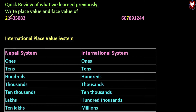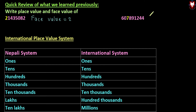We are going to write the place value and face value of the digits. Face value of 2 is equal to 2. Now we have the face value which contains 7, so face value of 7 is 7. Now what does the place value have here?